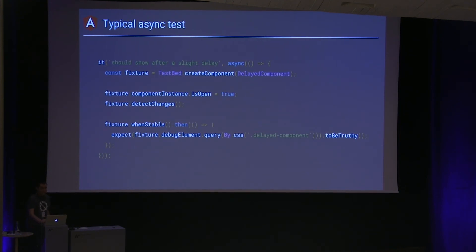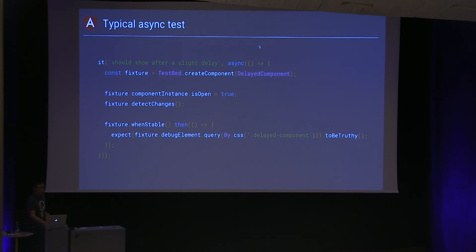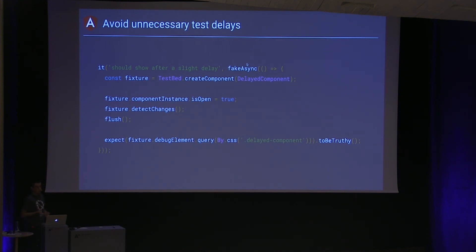Here's another testing tip. A typical async test usually looks like this: you create your component, toggle something, wait for the zone to stabilize, then do your assertions. But this can cause your test to hang before the zone stabilizes, and in IE and Edge it can time out if the browser is minimized. What you can do instead is use the fakeAsync zone, which makes everything synchronous, resulting in cleaner and faster tests. All you have to do is wrap it in fakeAsync instead of async, then instead of waiting for fixture stability, you just flush out all the async tasks — and the assertions remain exactly the same.